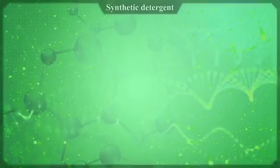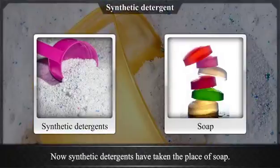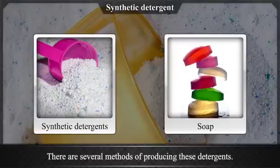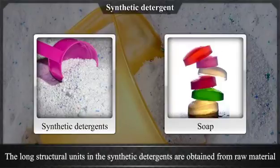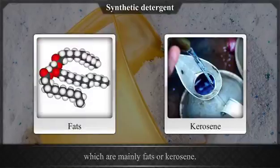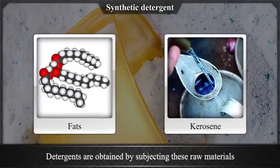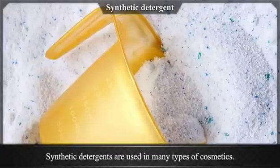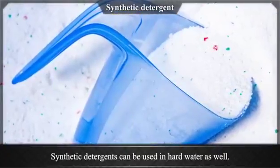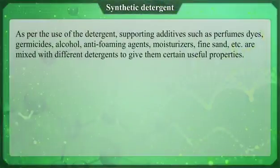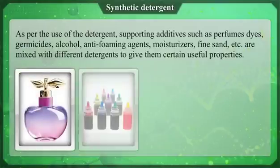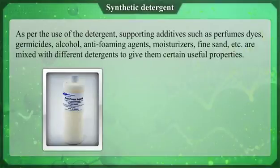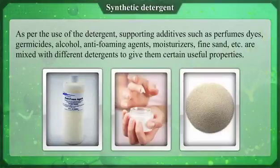Synthetic detergents have now taken the place of soap. The long structural units in synthetic detergents are obtained from raw materials which are mainly fats or kerosene. Detergents are obtained by subjecting these raw materials to a variety of chemical processes. Synthetic detergents are used in many types of cosmetics and can be used in hard water as well. Supporting additives such as perfumes, dyes, germicides, alcohol, anti-foaming agents, moisturizers, and fine sand are mixed with different detergents to give them certain useful properties.